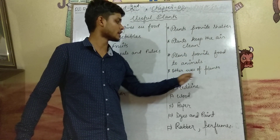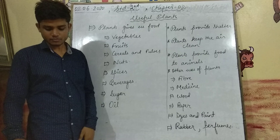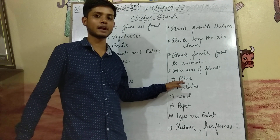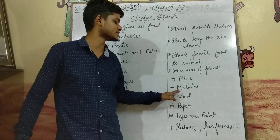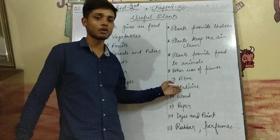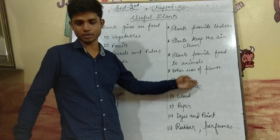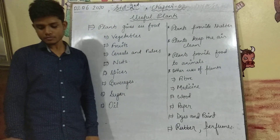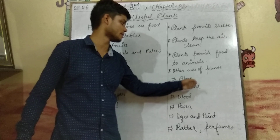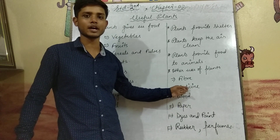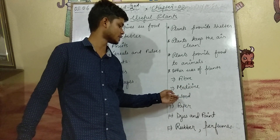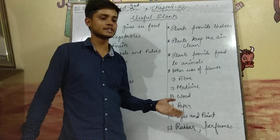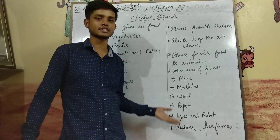Other uses of plants: plants provide us fiber — for example, cotton is a fiber from plants. Medicine also comes from plants. We also use wood from plants to make benches, large furniture, and chairs.